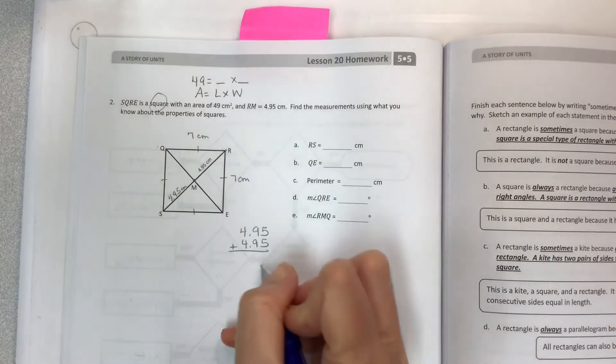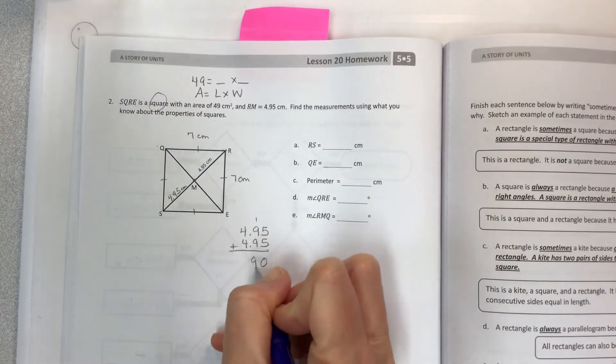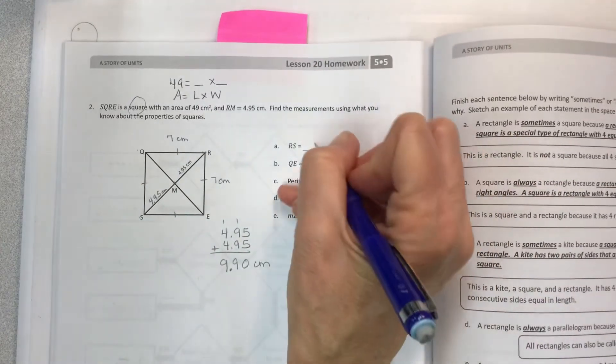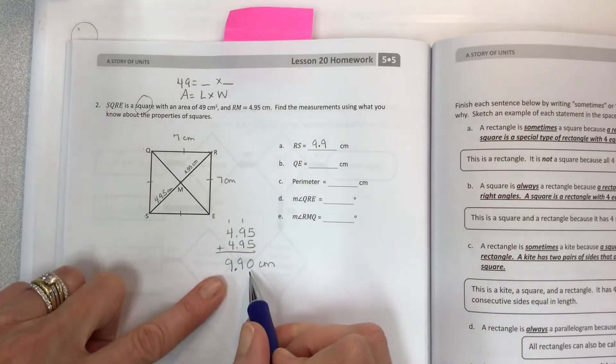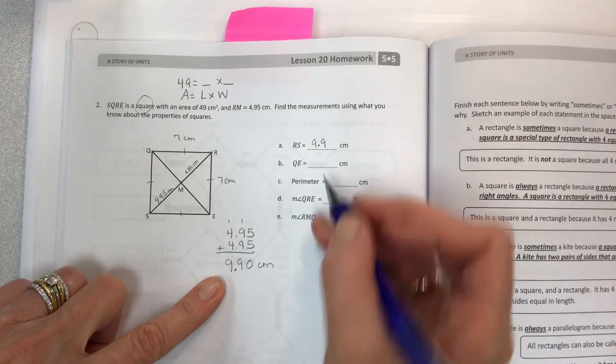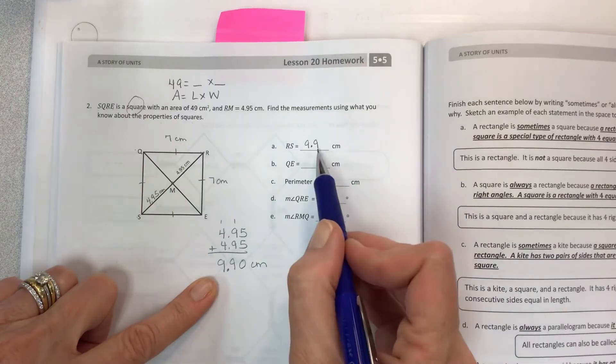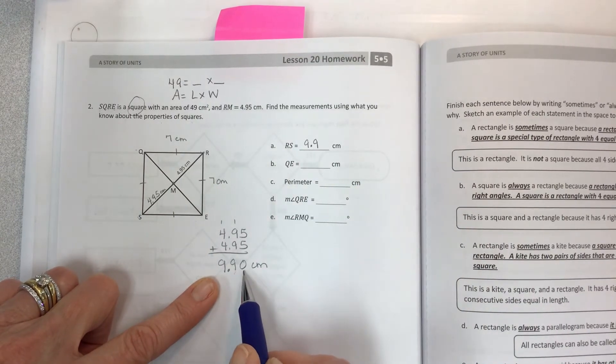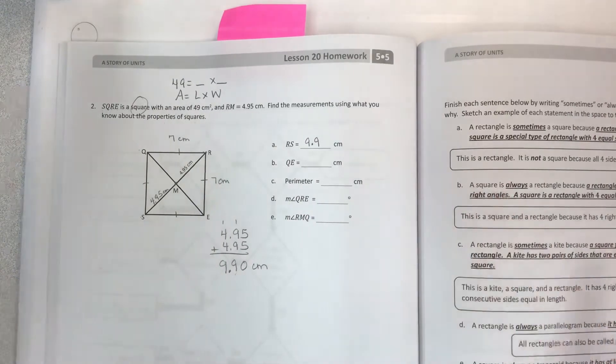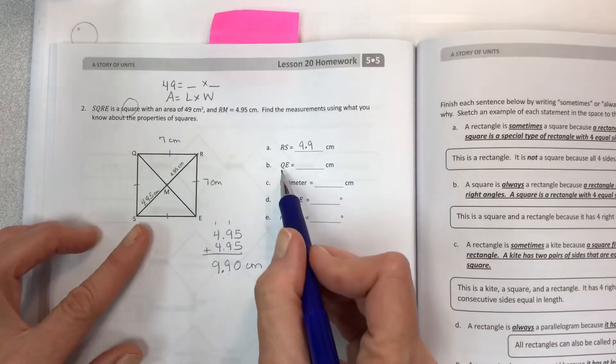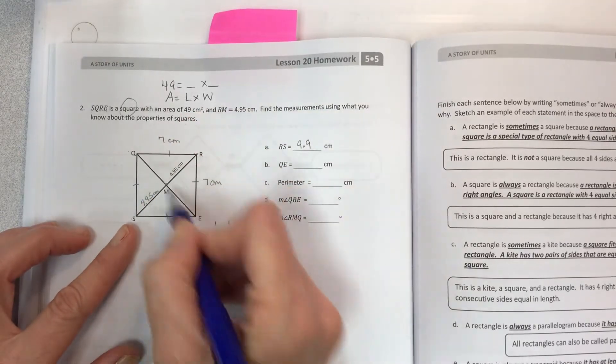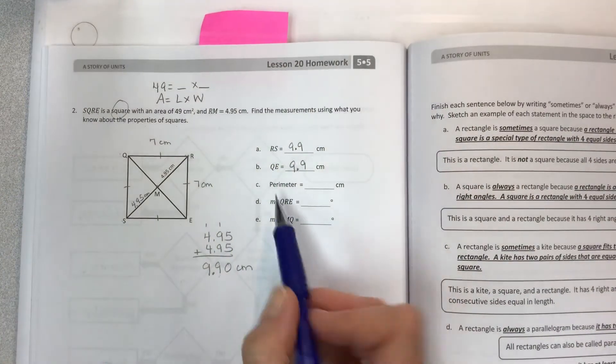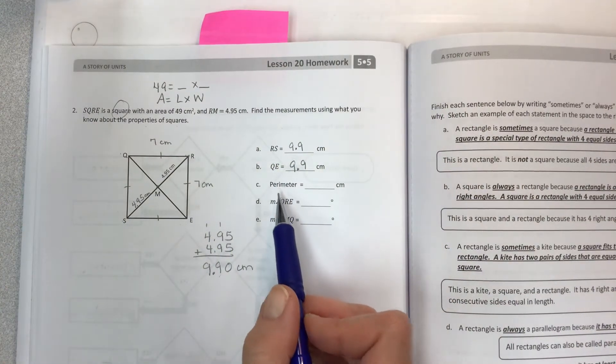Add it to itself or multiply times 2, and you end up with 9.9. Now do you have to put the zero there? No you don't have to. You can put it there if it makes your little heart happy, or you can just leave it at 9.9. The tenths place has value but the hundredths place has a zero and it's the end, so we don't have to write that. The same with QE. Diagonals in a square have the same value, therefore the same answer.